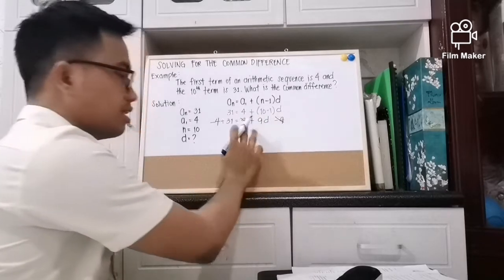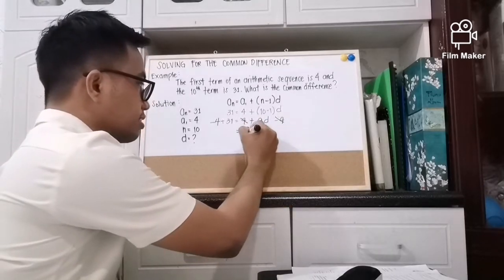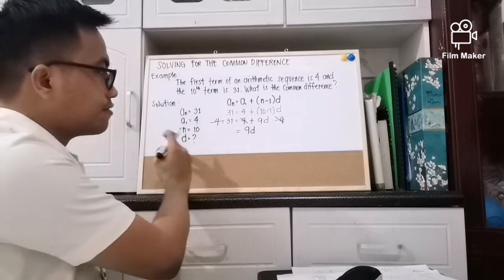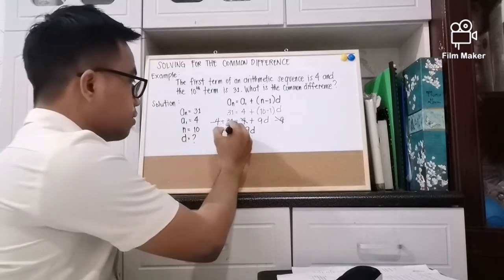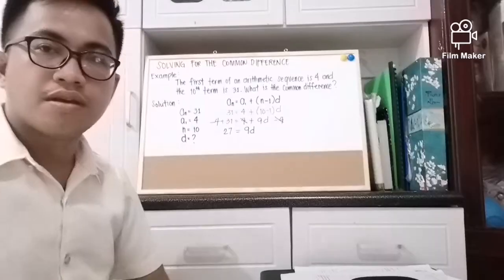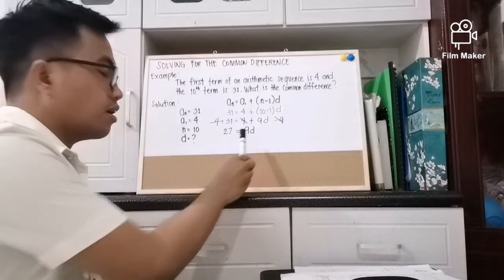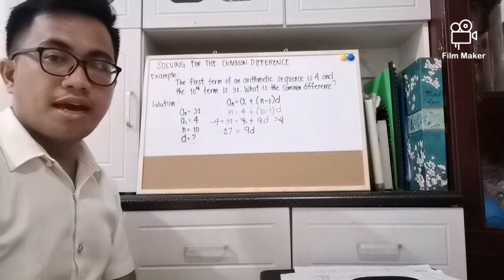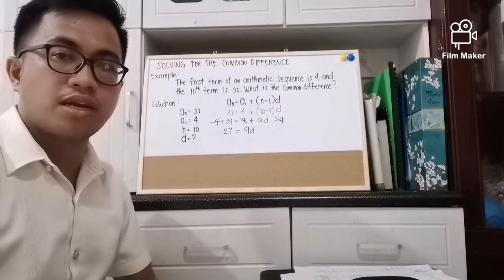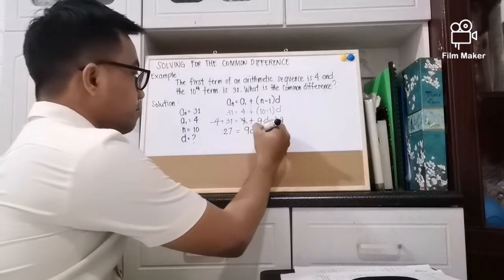On the right side we have 9d, and on the left side we have 27. To cancel out 9, we apply the Multiplication Property of Equality — we multiply by 1 over 9 on both sides.